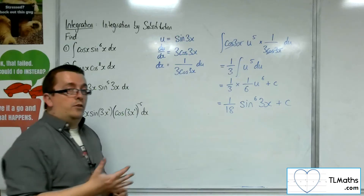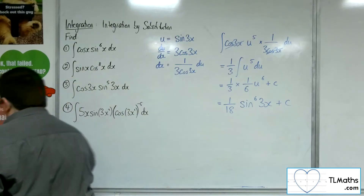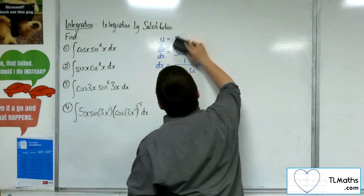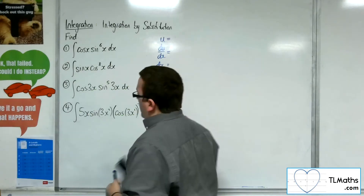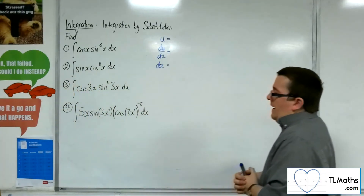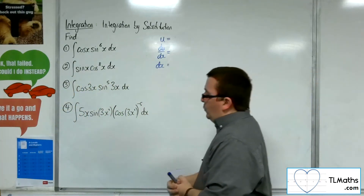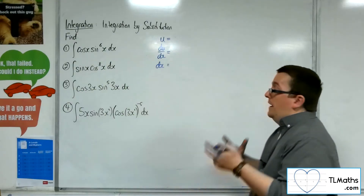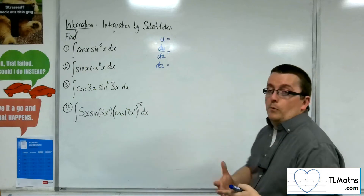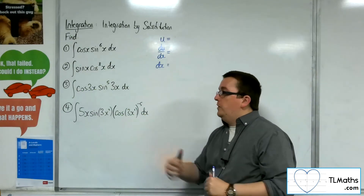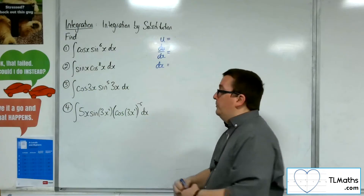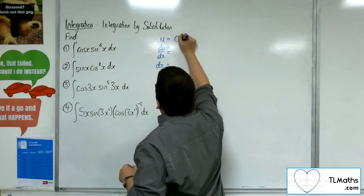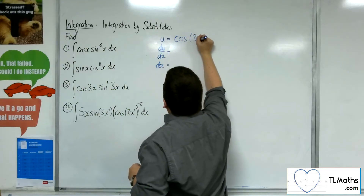And that is number 3. So we've got our last one, number 4. We've got 5x sine of 3x squared times cosine of 3x squared to the power of minus 5. It looks absolutely horrific, but we're going to go through it exactly the same way. It's the cosine of 3x squared that will be u, the substitution — that's what's causing the most problems. So u equals cosine of 3x squared.